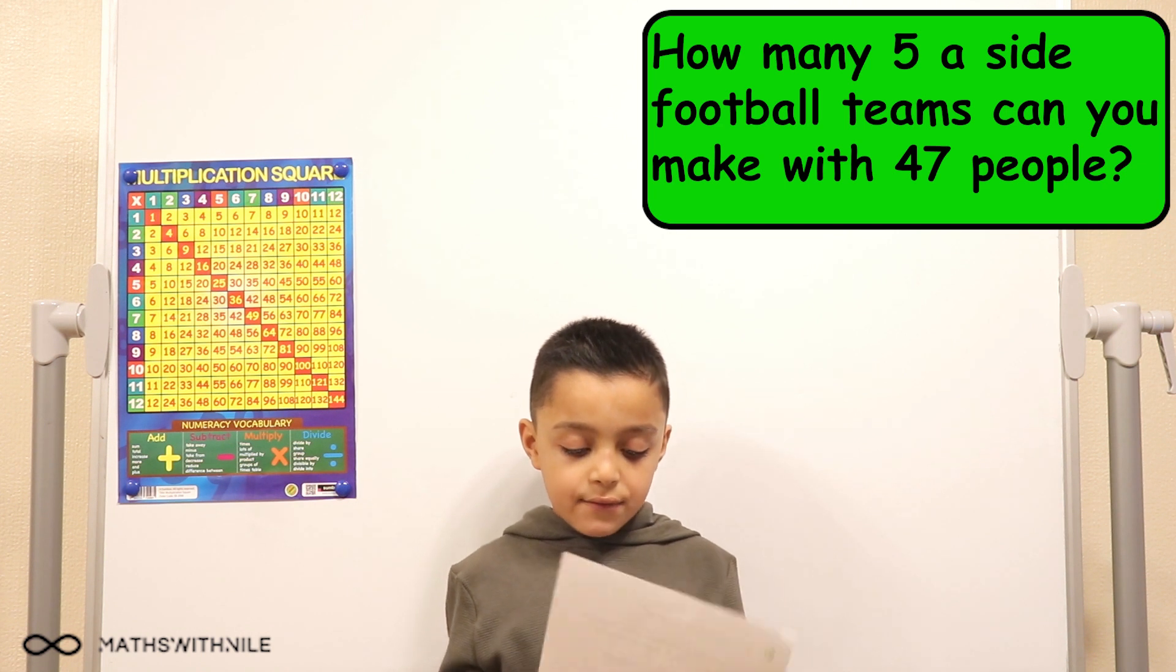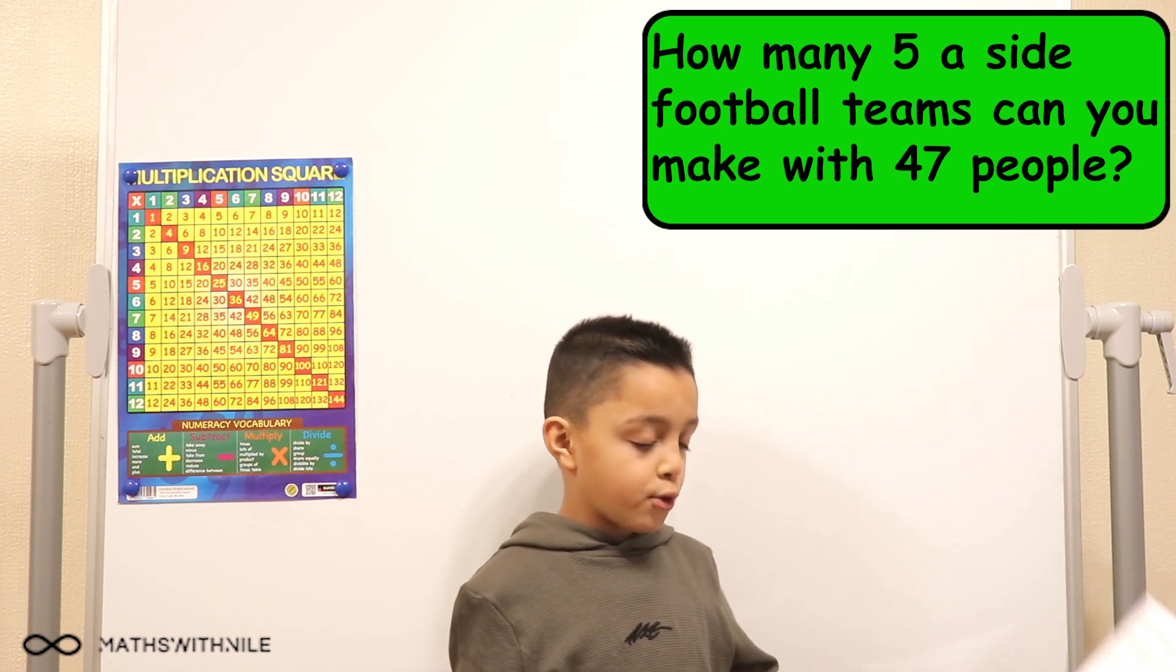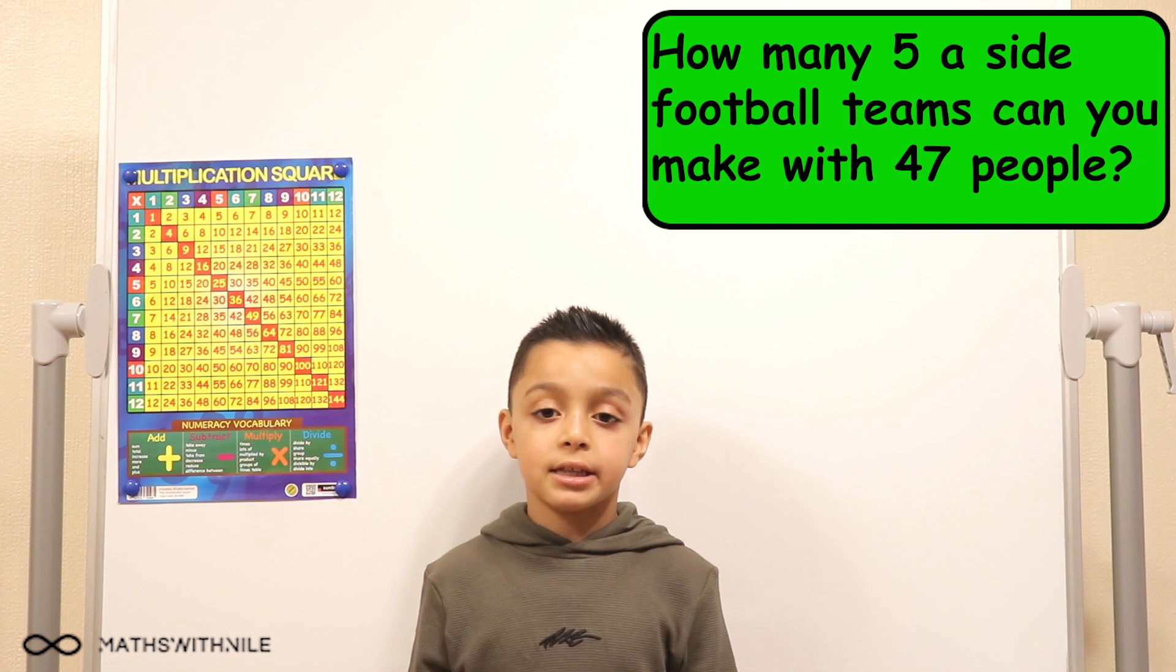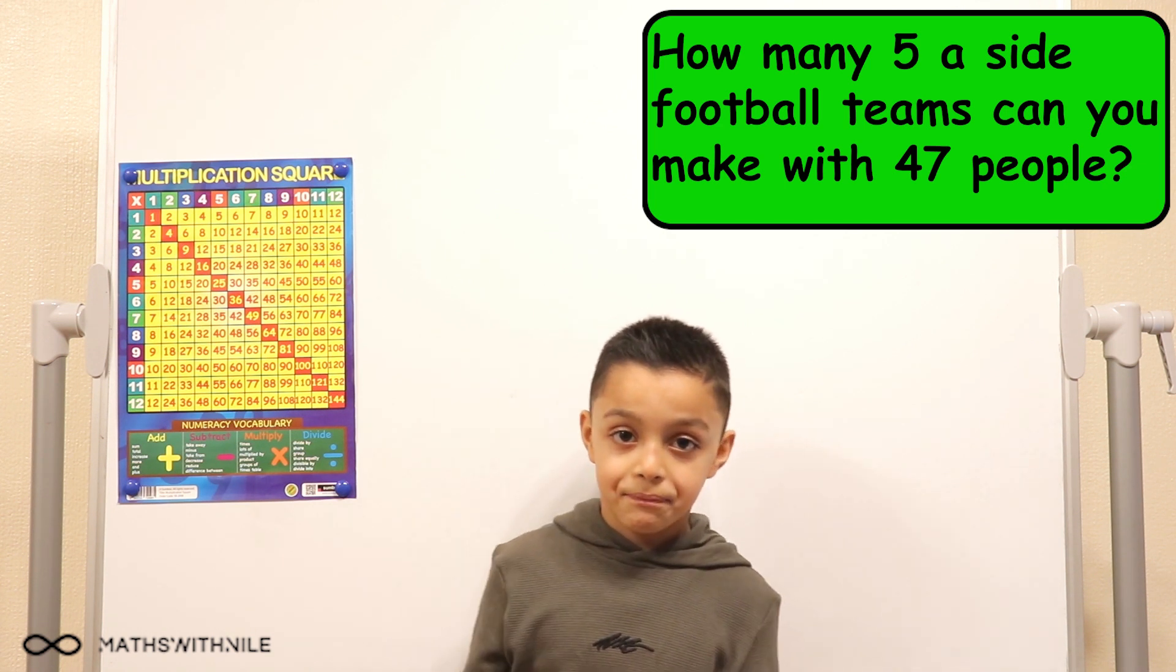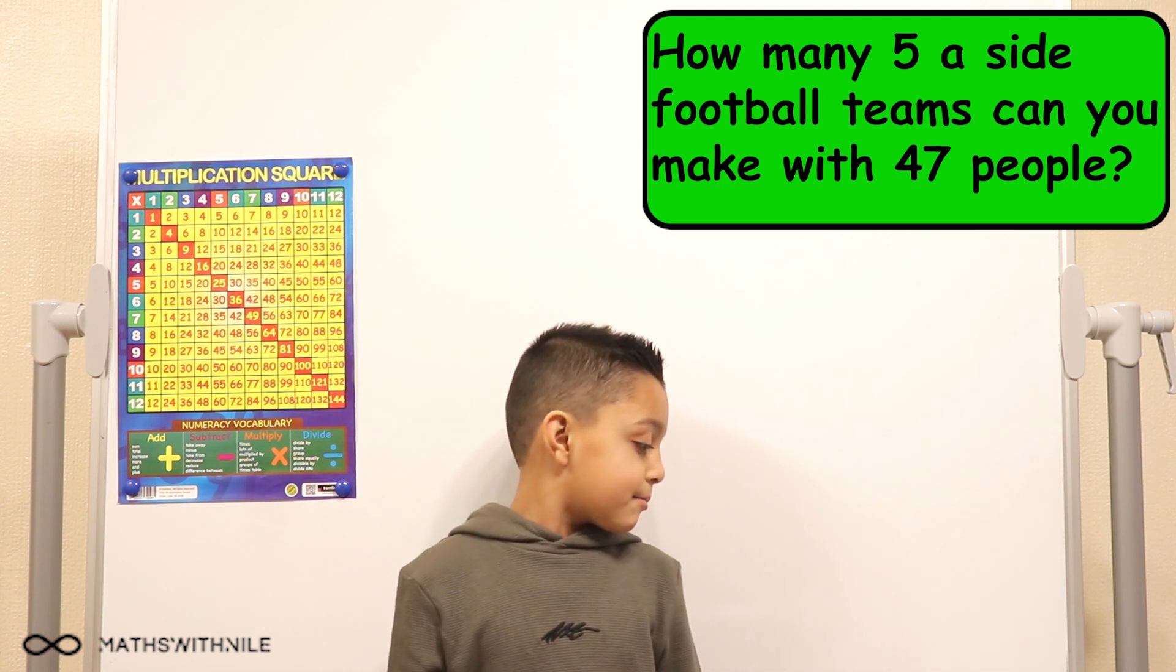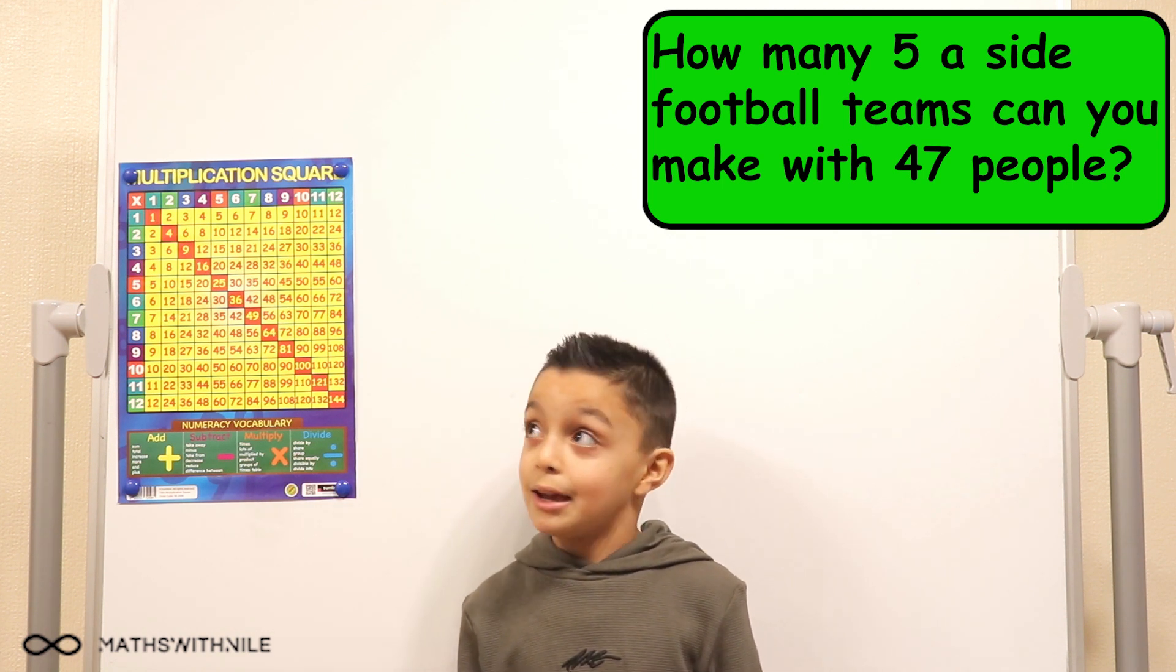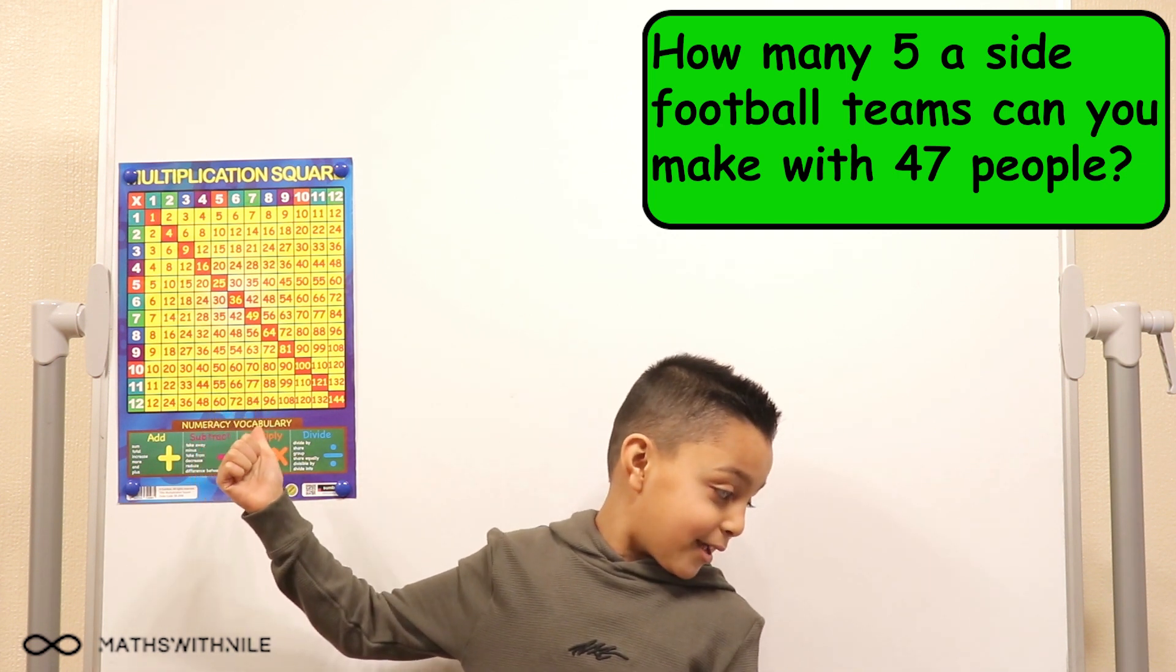How many five-a-side football teams can you make with 47 people? So if you don't know what five-a-side means, it means how many teams could you make with five people. So five-a-side means five people in a team. Yeah. Okay. So you want to see how many five-a-side teams you can make if you have 47 people. Yeah. Okay. Are we going to do that on the grid? You can do it wherever you like. Okay.